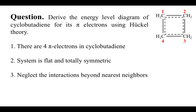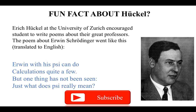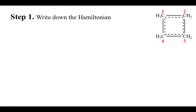But before that, make sure to subscribe to my channel and hit the bell notification so you don't miss my new videos. Here's a fun fact about Erich Hückel, who developed Hückel molecular orbital theory. When he was teaching at the University of Zurich, he encouraged his students to write poems about great professors. One of the most famous poems is about Erwin Schrödinger, translated from German: 'Erwin with his psi can do calculations quite a few, but one thing has not been seen — just what the psi really means.' This shows that many scientists are interested in poetry in their own manner.